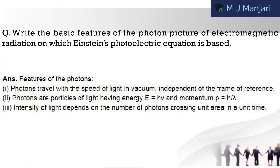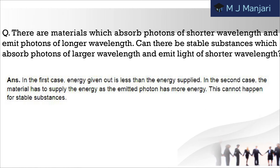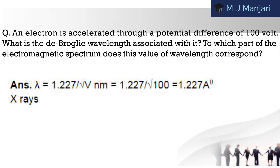Next: write the basic features of the photon picture of electromagnetic radiation on which Einstein's photoelectric equation is based. Next: there are materials which absorb photons of shorter wavelength and emit photons of longer wavelength. Can there be stable substances which absorb photons of larger wavelength and emit light of shorter wavelength? Next: an electron is accelerated through a potential difference of 100 V. What is the de Broglie wavelength associated with it? To which part of the electromagnetic spectrum does this value of wavelength correspond?